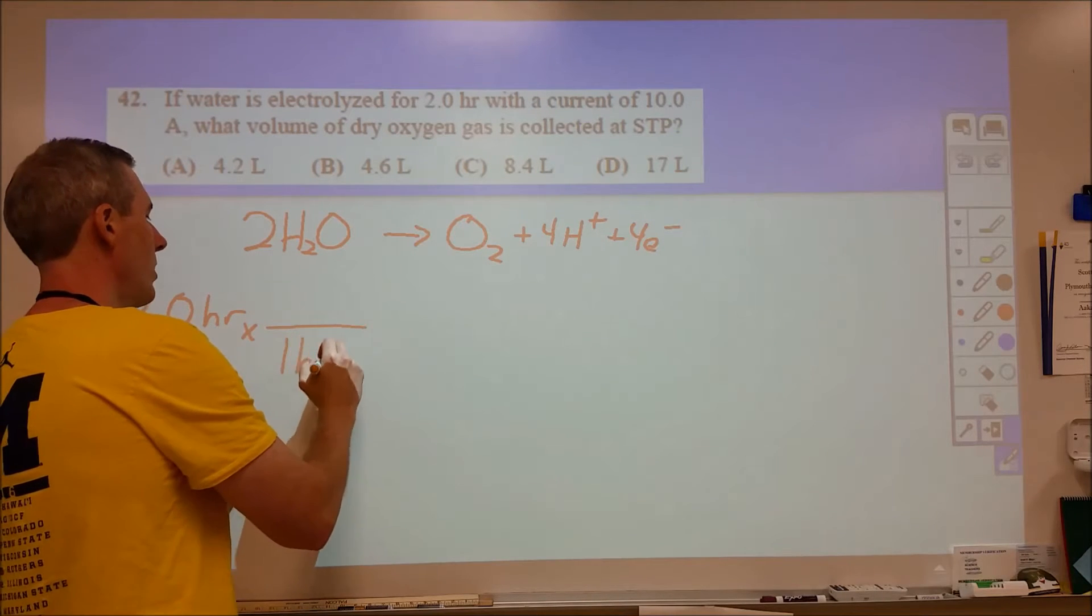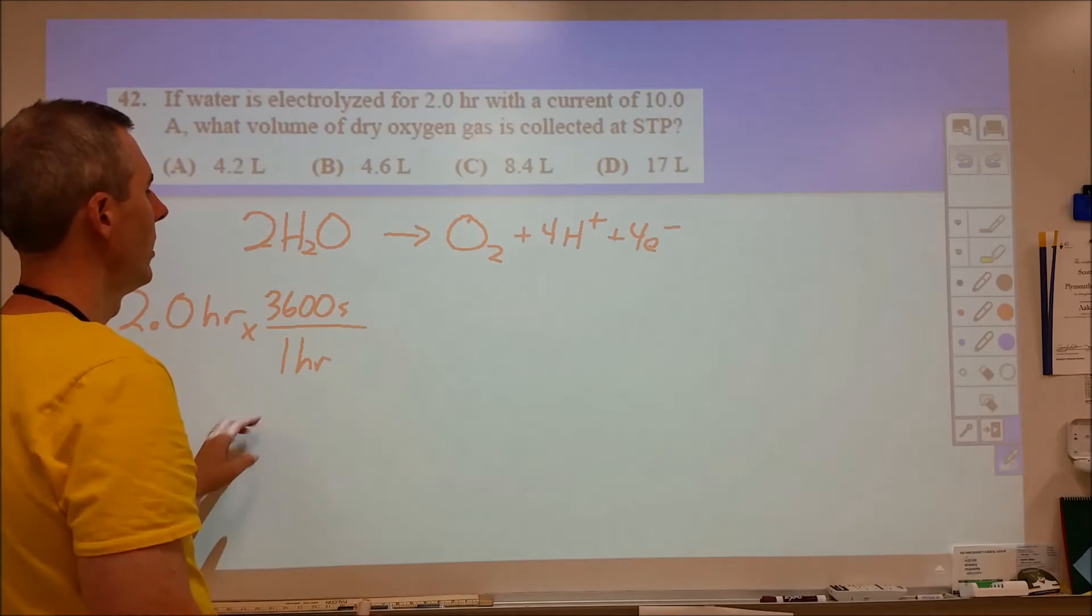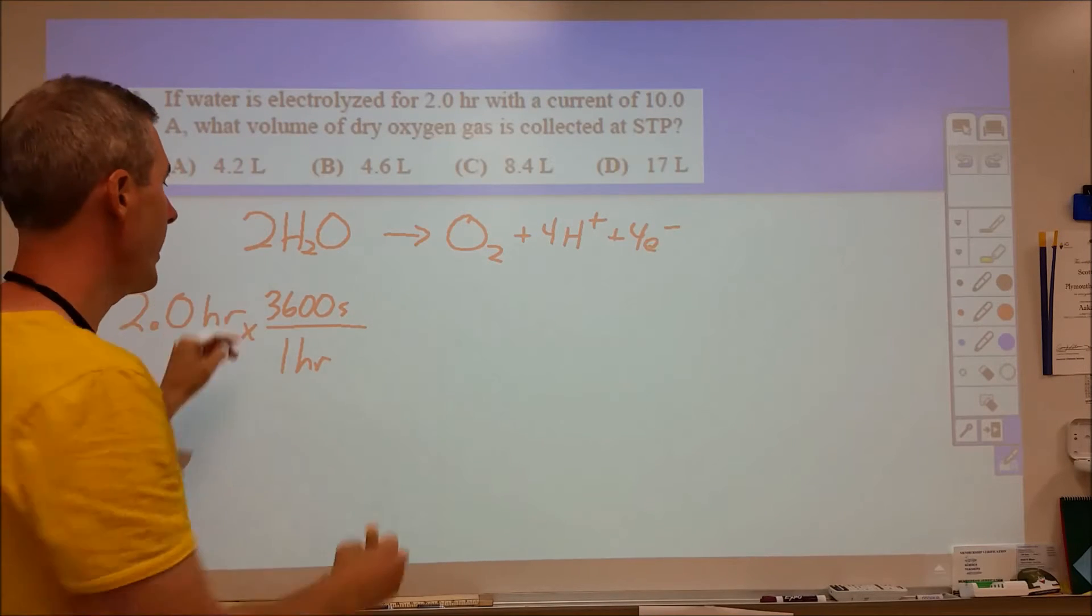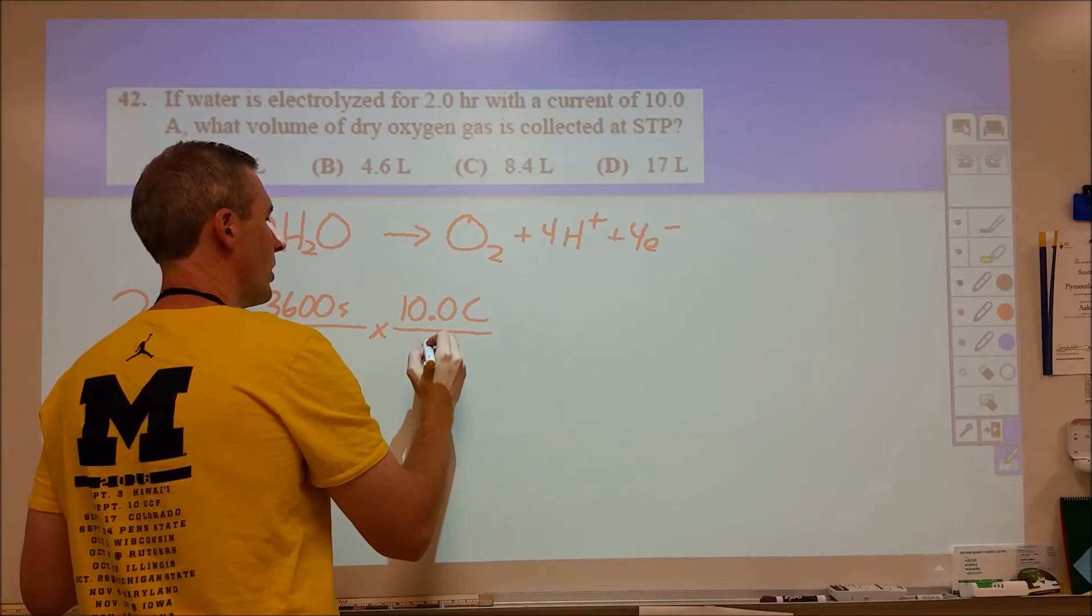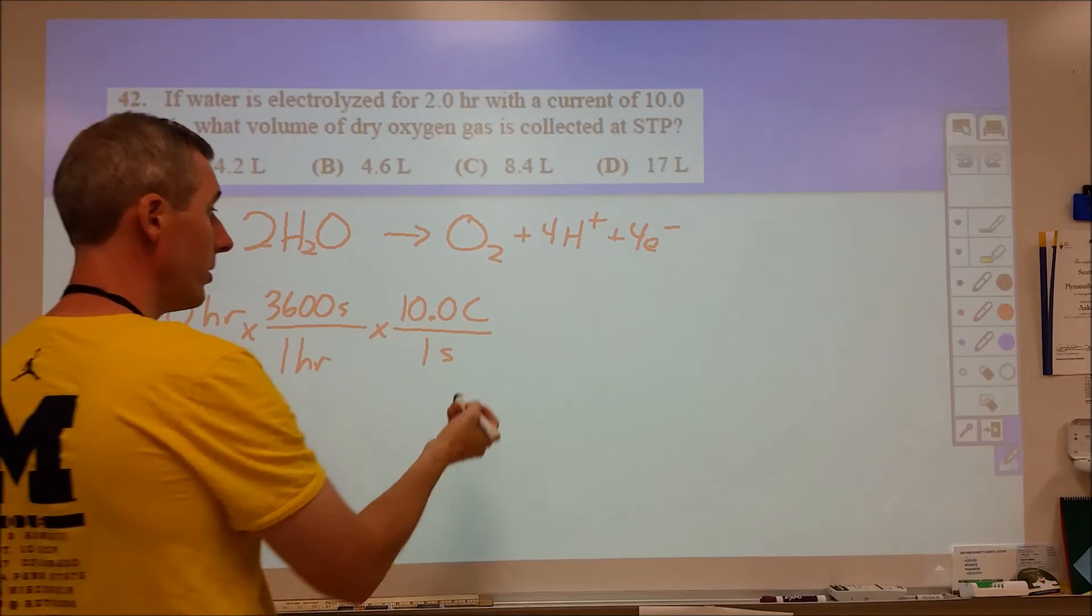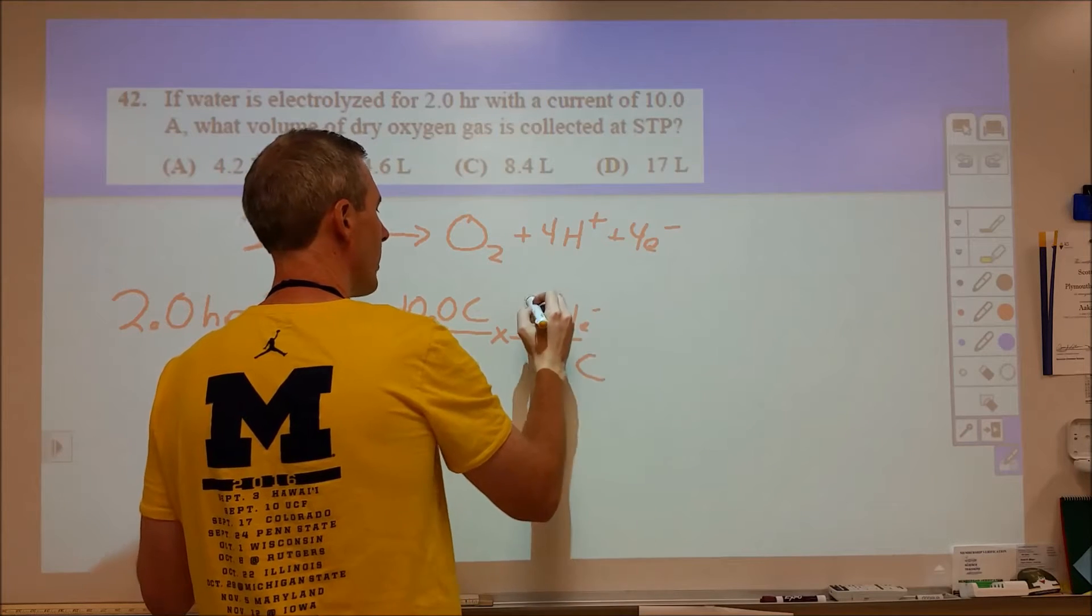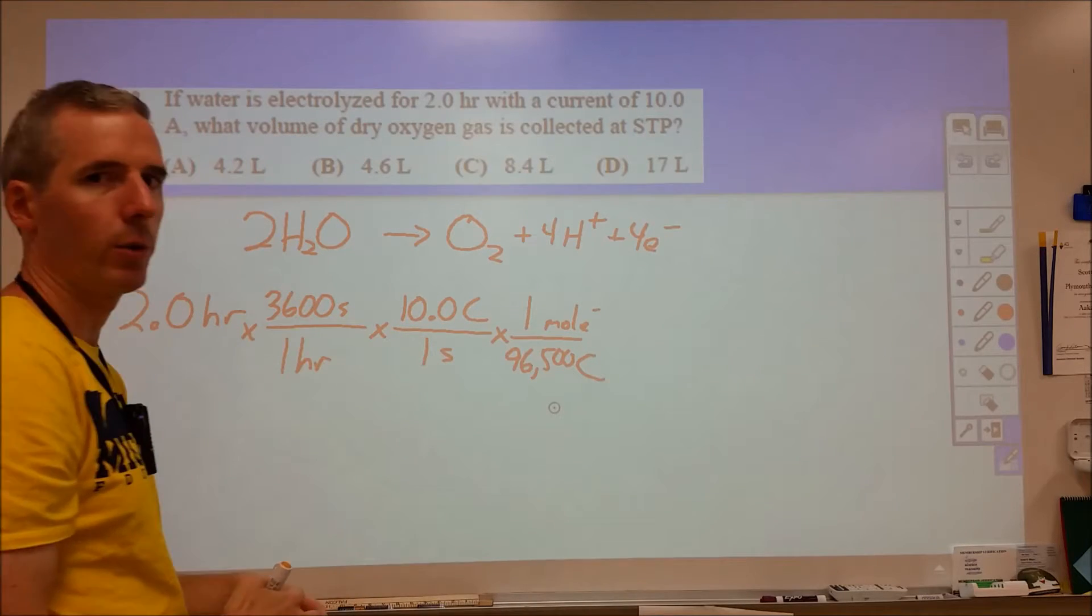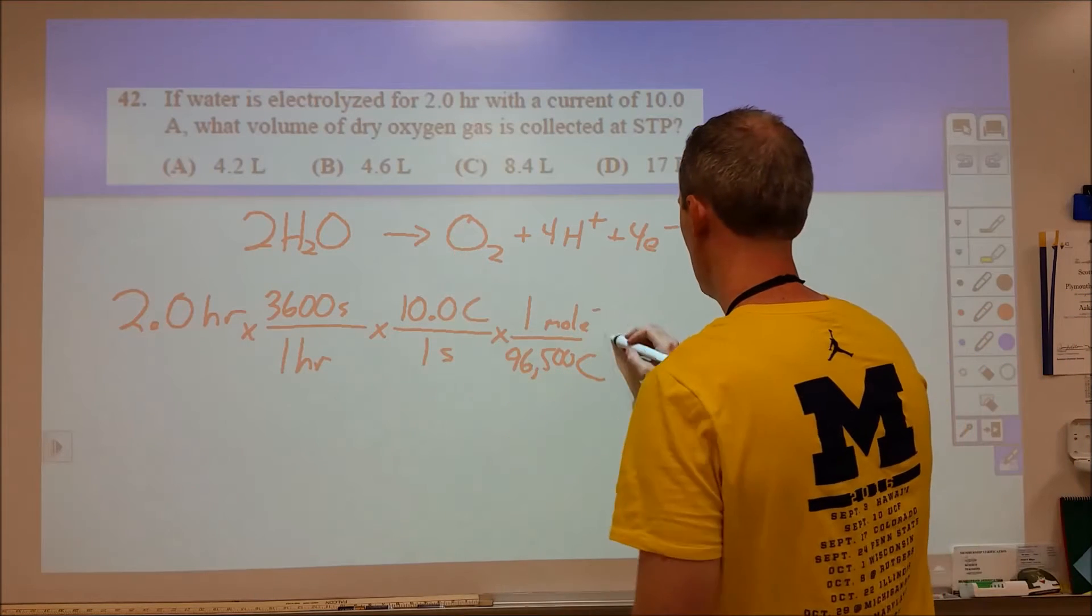One hour is 3600 seconds. Alternatively, you can go hours to minutes to seconds. From seconds, many people get stuck. You want to know that amperage is coulombs per second. So 10 amps is really 10.0 coulombs of charge per one second. You have to know to use amperage as that conversion factor. The other one you need is that 96,500 coulombs is equivalent to 1 mole of electrons in charge using the Faraday concept. Now we're at a basic stoichiometry problem. 4 moles of electrons to 1 mole of oxygen.